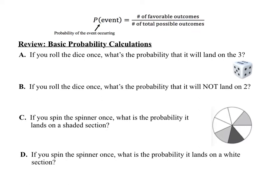Let's review some basic probability calculations. To calculate the probability of an event, you take the number of favorable outcomes divided by the number of possible outcomes. For notation, you use a capital P and then put the event in parentheses — like P(3). For this first example, if you roll the die once, what's the probability that it will land on a 3? There is one 3 on a die, and six possible outcomes, so the probability would be 1 out of 6.